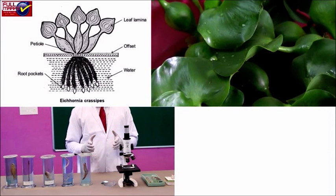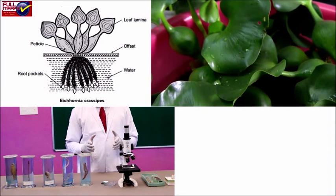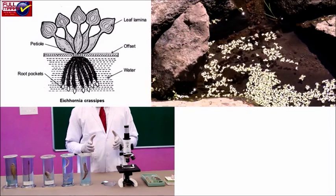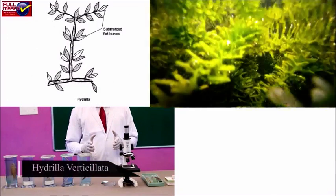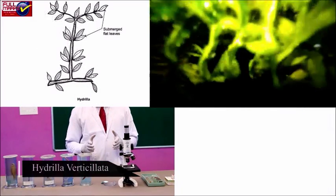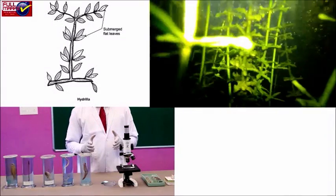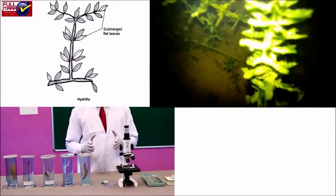Leaves have waterproof waxy and cuticular coating to prevent wetting. Hydrilla verticillata or Waterweed. It is a submerged hydrophyte. Sclerenchyma and collenchyma are absent. Stem is thin and soft.